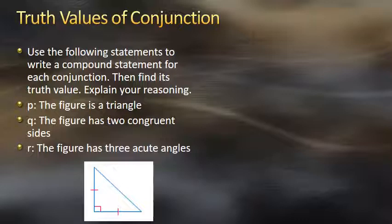For a conjunction to be true, where we have two statements joined together by 'and,' both statements have to be true. If either statement is not true, or if both statements are not true, then the conjunction is not true. And we're going to take a look in a moment at disjunctions, or 'or' statements, and I'll give a description of that shortly.